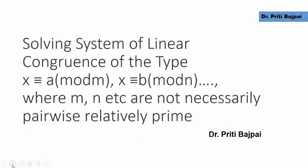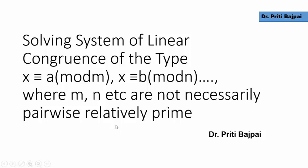Hi guys, here we are going to learn how to solve a system of linear congruences of the type X is congruent to A mod M, X is congruent to B mod N, where M and N, the moduli, are not necessarily pairwise relatively prime.